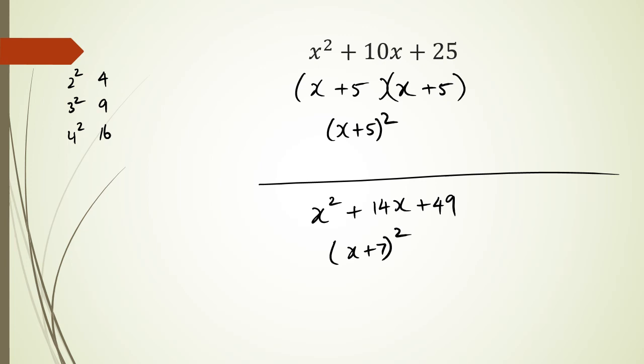Now, this is factorizing perfect squares. However, when we get to difference of two squares, I'm going to show you in the next slide, is when you get a question like this, x squared minus 9, and you've got to factorize this.